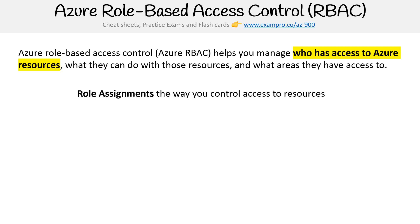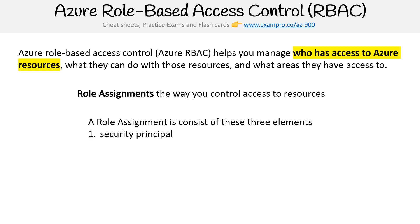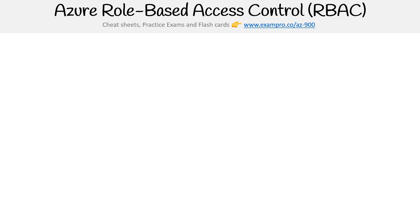You have role assignments, and this is the way you control access to resources. A role assignment consists of three elements: the security principle, the role definition, and the scope.